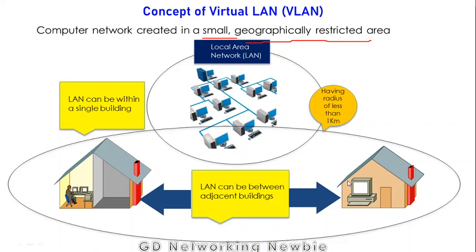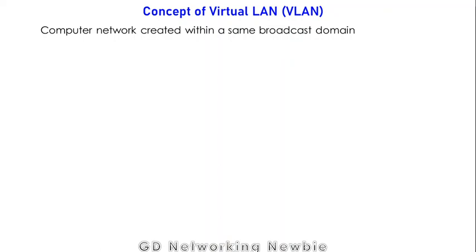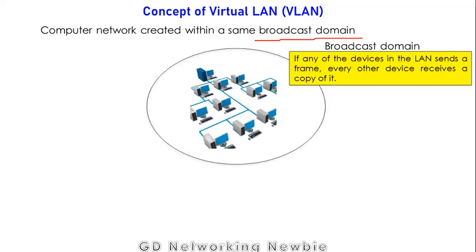To discuss Virtual LAN, let us first look at a stricter definition of Local Area Network: a computer network created within the same broadcast domain. Previously we said a LAN should be in a small geographic area, but now we're defining a LAN as a computer network created within a same broadcast domain. If any device in the LAN sends a frame, every other device receives a copy of it.